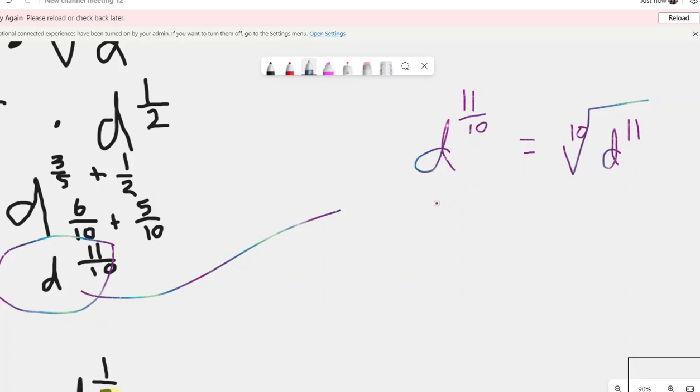You can do it either way. You can do it from here and break that apart and understand that that's going to be the same thing as D to the ten over ten, which is just D to the first power, times D to the one over ten power, so times D to the one-tenth.